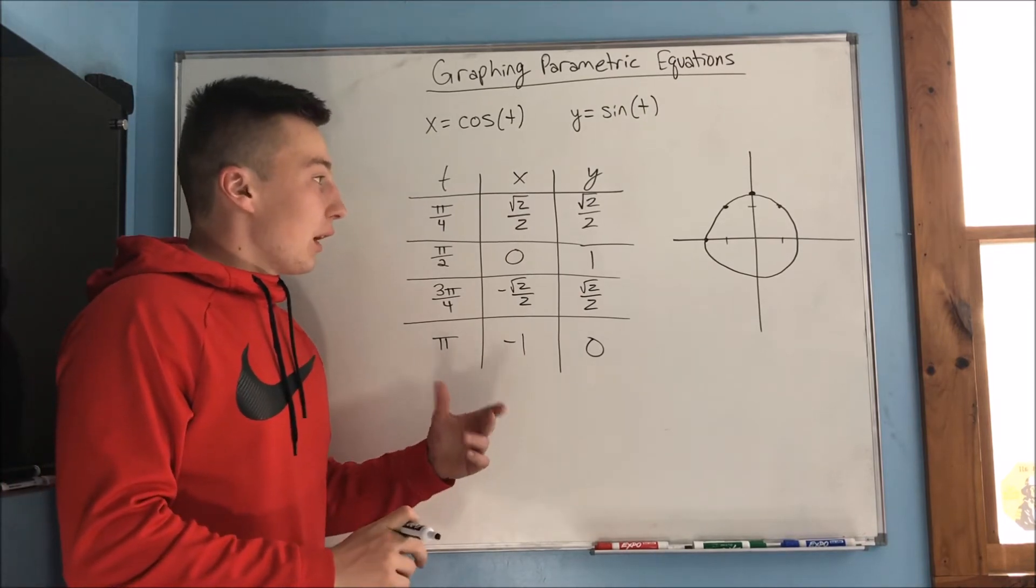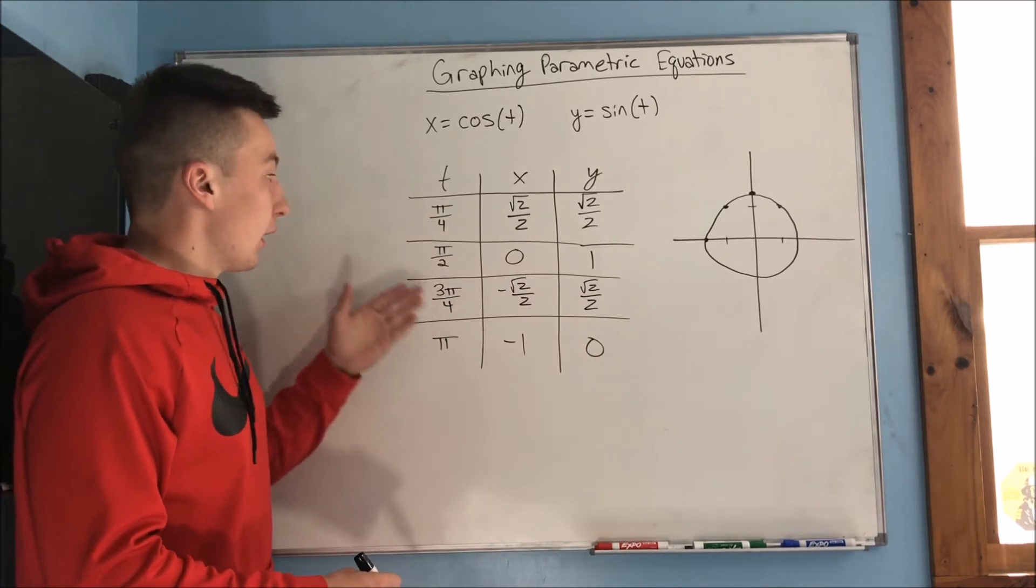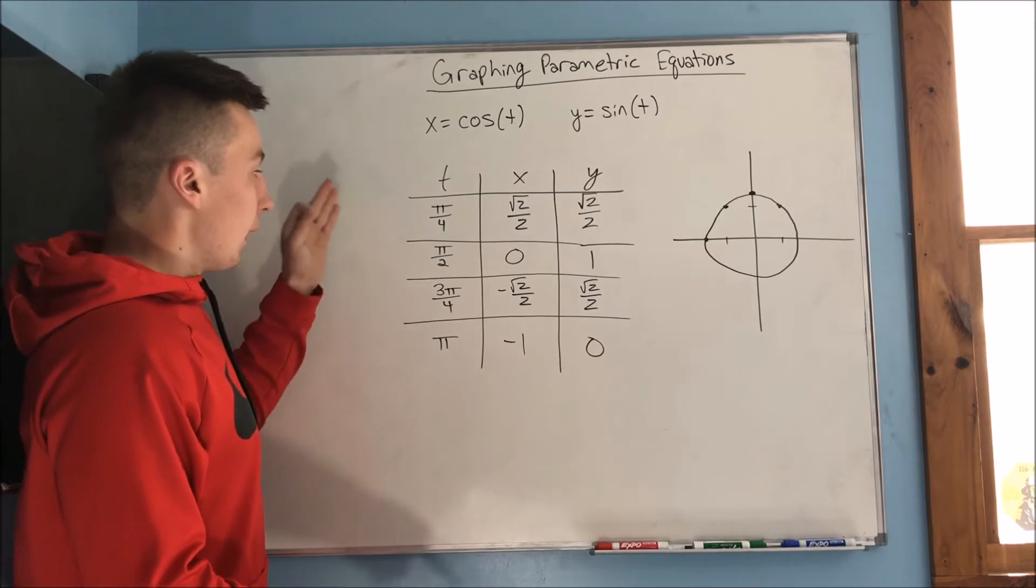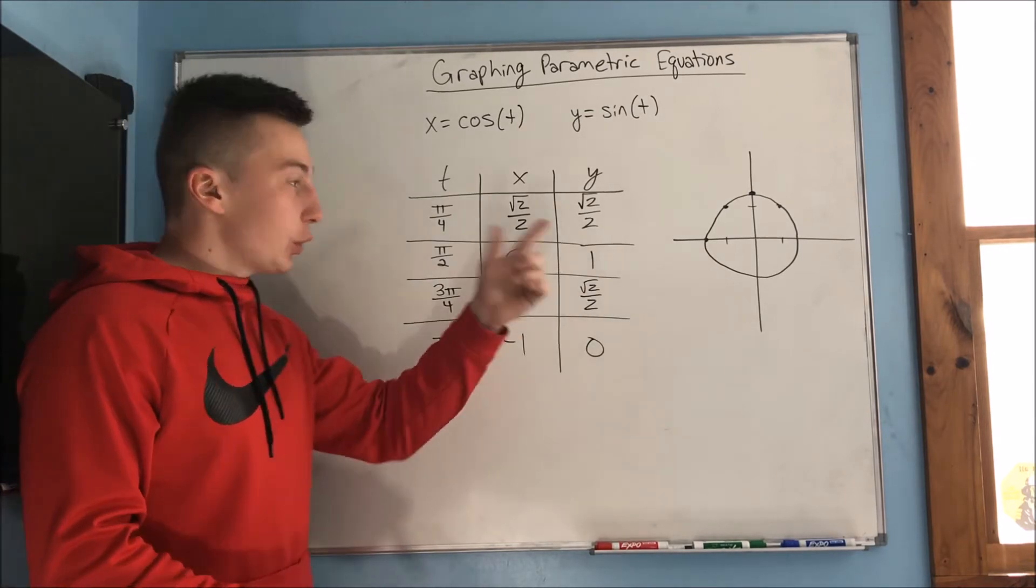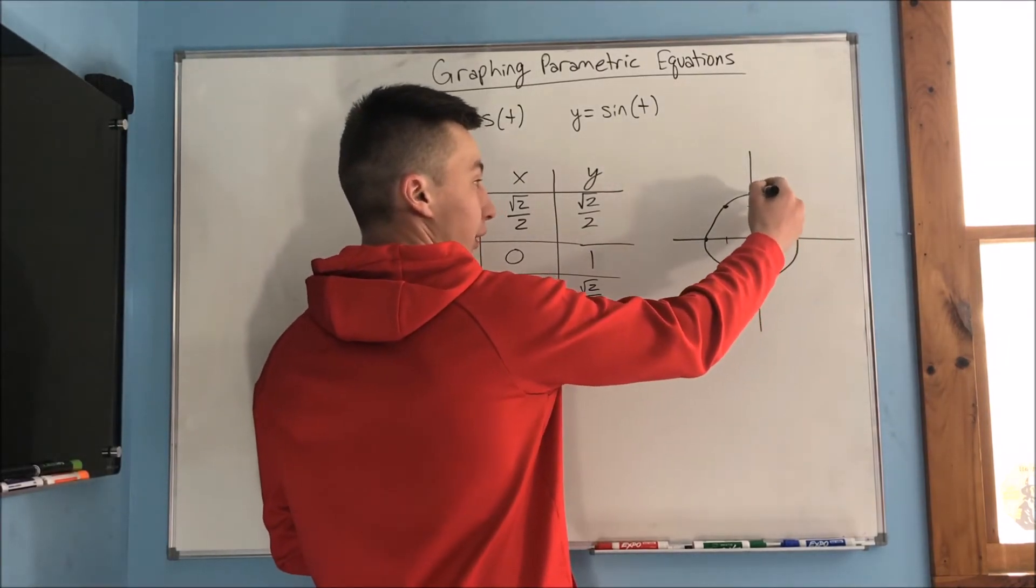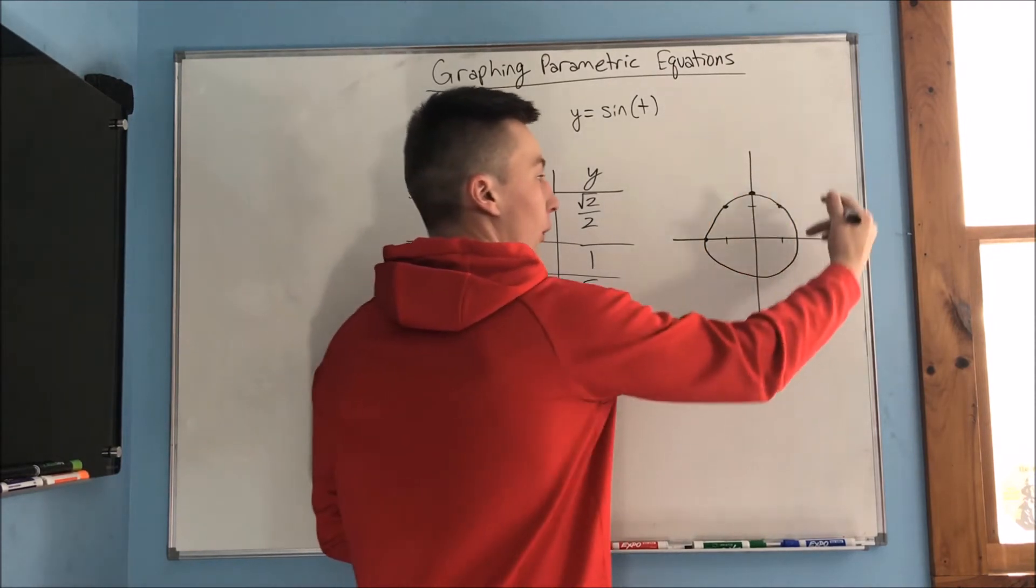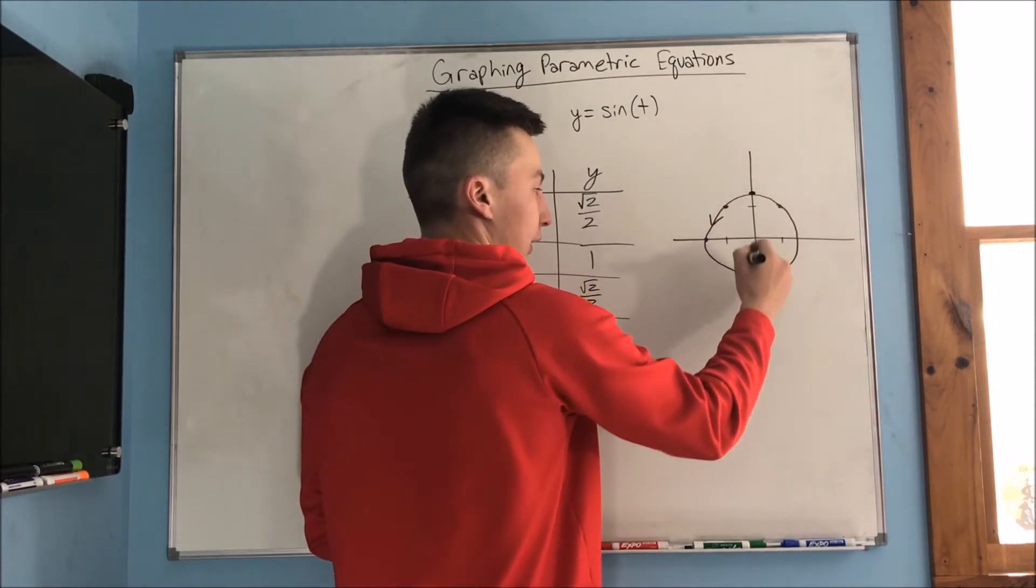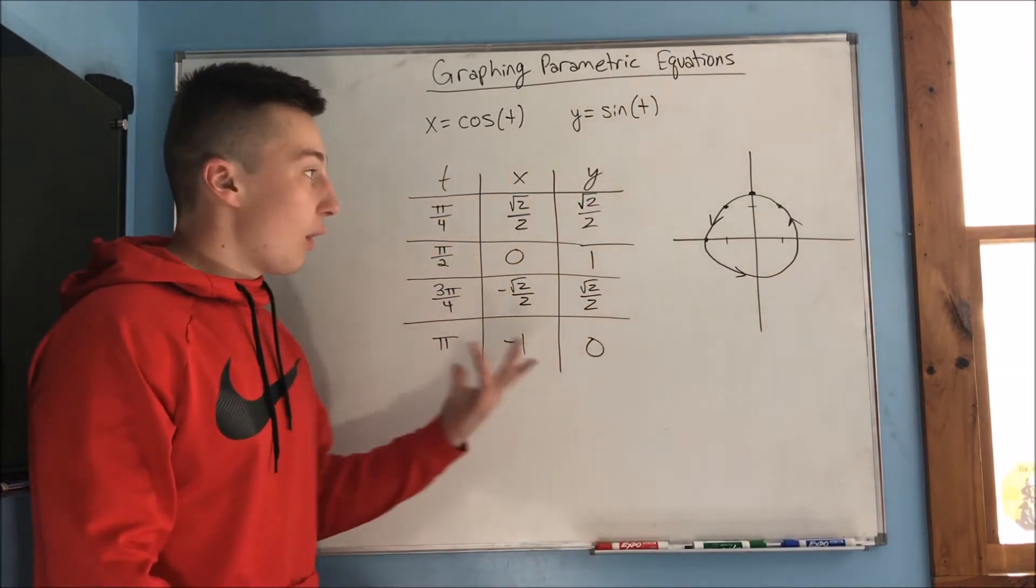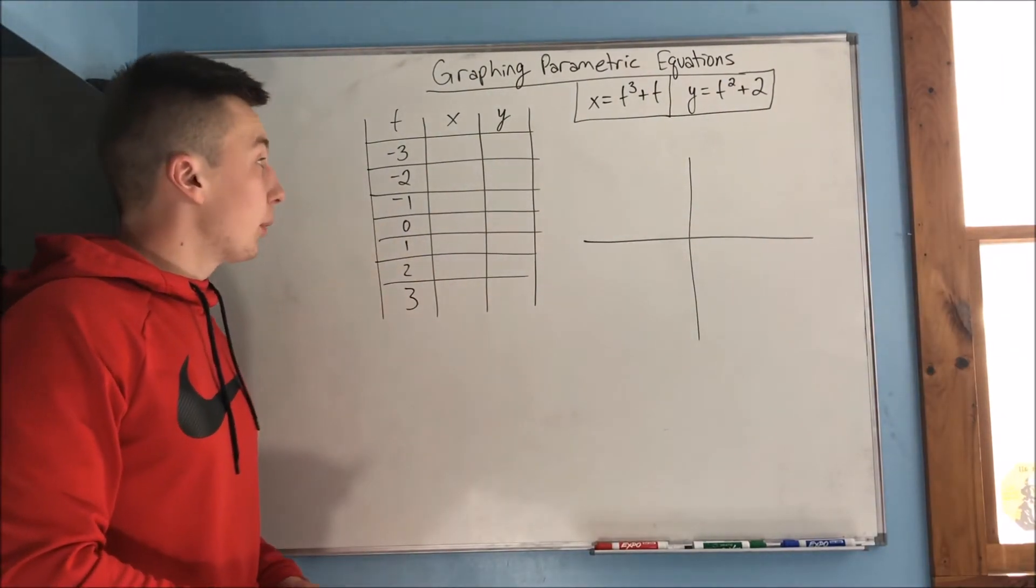So now, the last thing that we need to do is we need to give this a direction. We need to give this a direction because time is only going in one direction. So as time increases, which way were we going around this unit circle? Well, remember, this was pi over 4, pi over 2, 3 pi over 4, and pi. So as we were increasing time, we were going counterclockwise. So we can give it this direction. And that now is a completed graph.